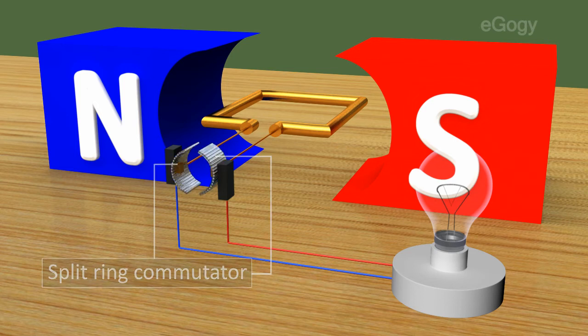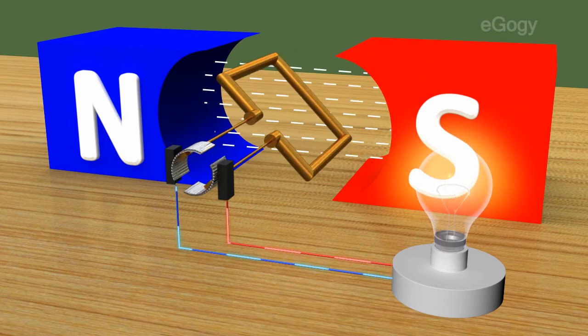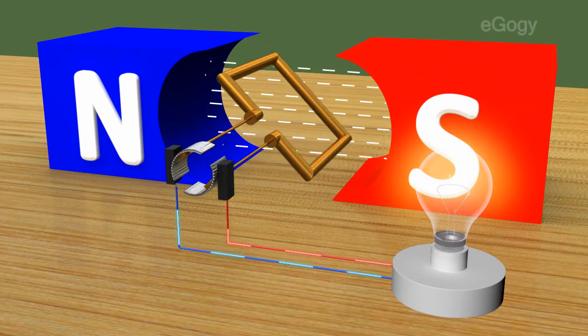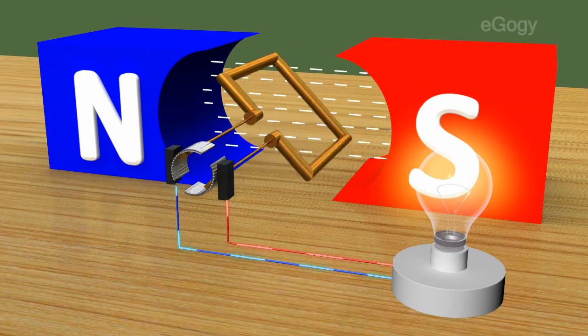In DC generators also, the EMF induced by the armature coil is AC in nature. This EMF is converted into DC using split ring commutator. The current flows to the external circuit through the graphite brush is unidirectional.